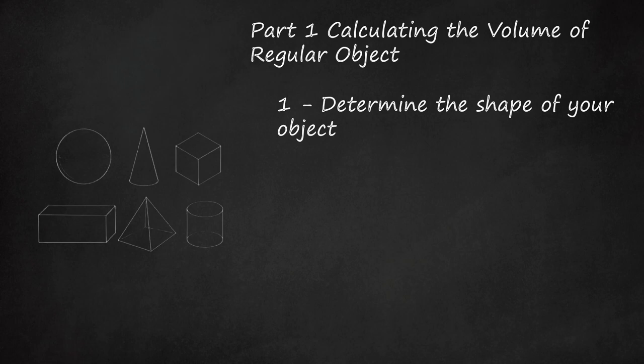A cone is a three-dimensional solid that has a circular base and a single vertex, the point of the cone. Another way to think of this is that a cone is a special pyramid that has a circular base.